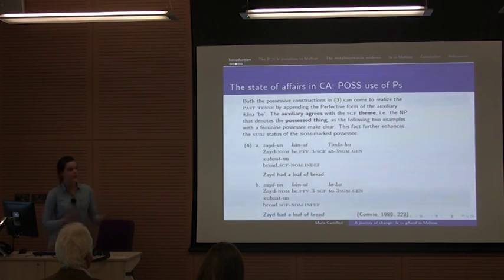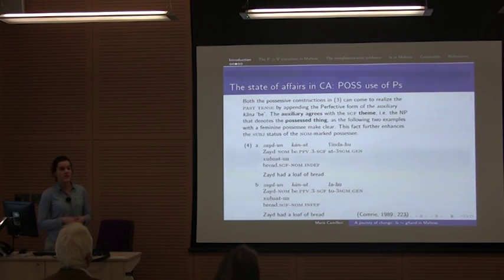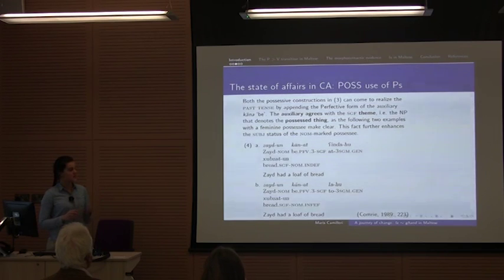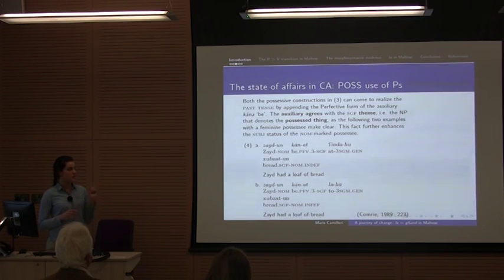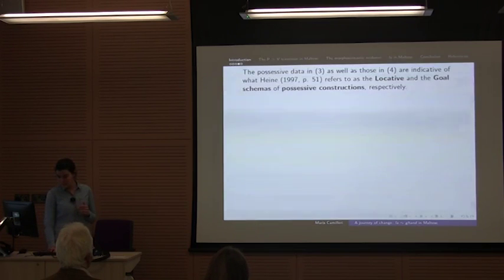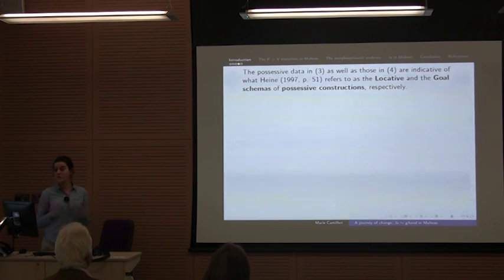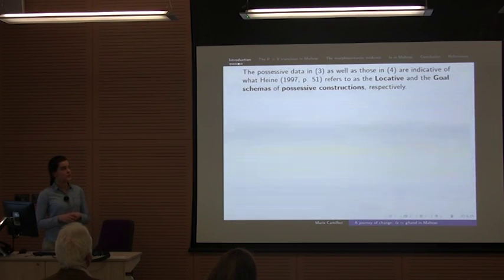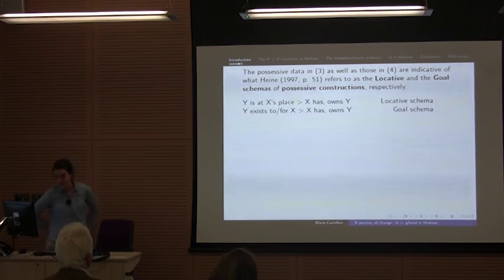If you were to put these two constructions in the past tense, you just have to add the auxiliary 'kana', which agrees with the theme. The theme in this context is feminine, so you can clearly see that the agreement of the auxiliary — the tense marker — is actually with the theme, which makes it subject-like. If we consider Heine's accounts of possession, especially 1997, we can assume that this use of 'inda' and 'li' are instances of what he would refer to as locative and goal schemas, which allow us to get a possession interpretation.